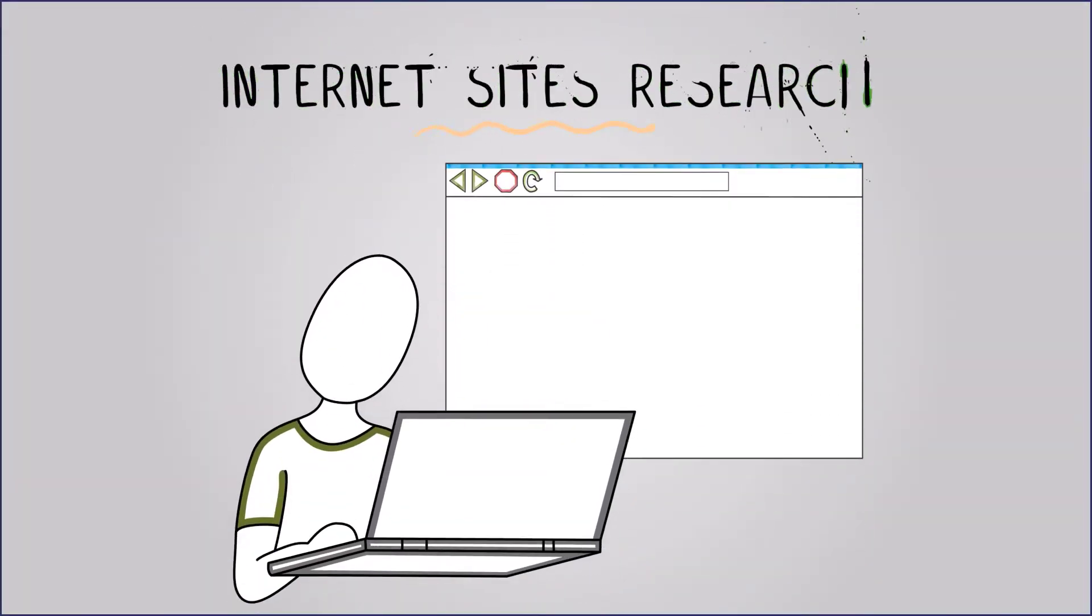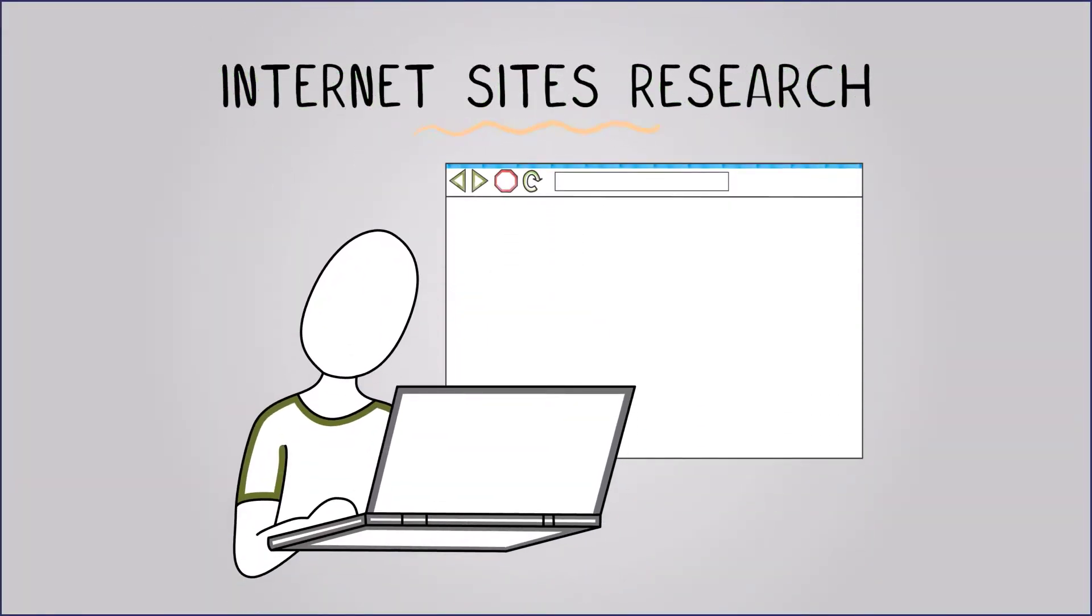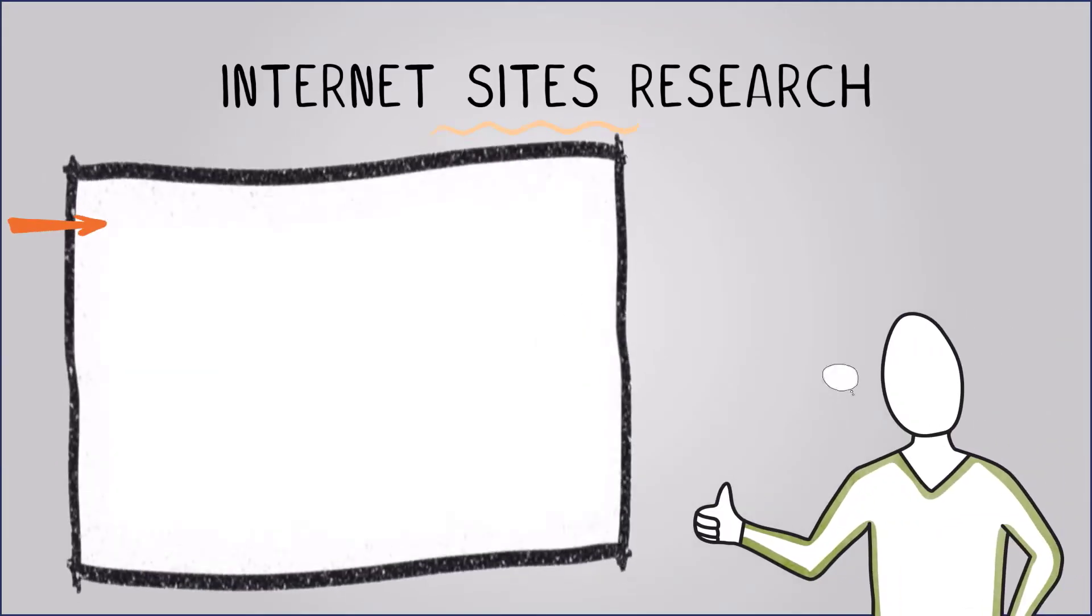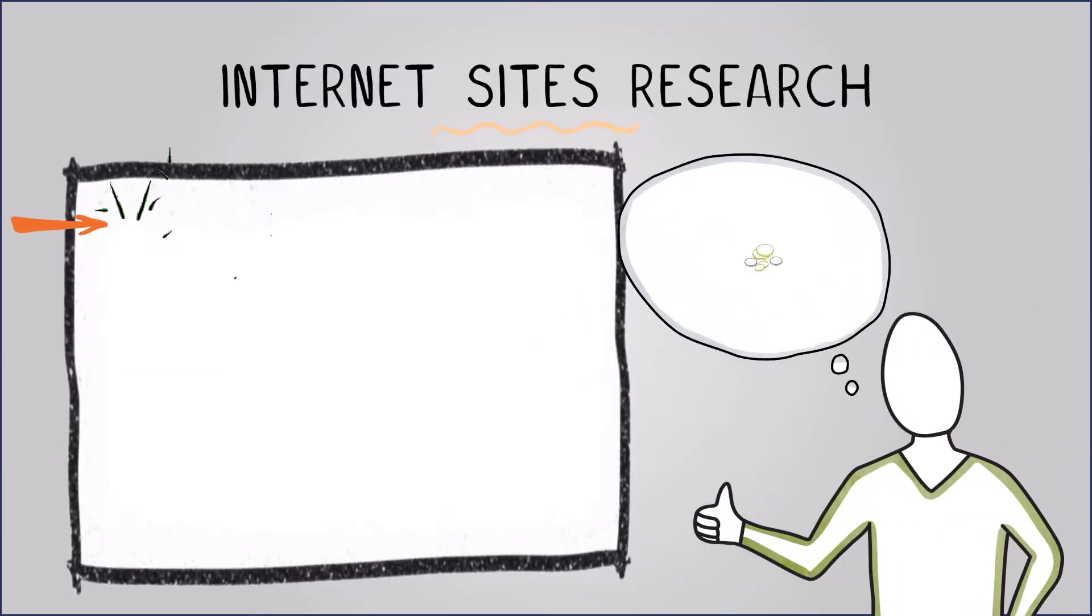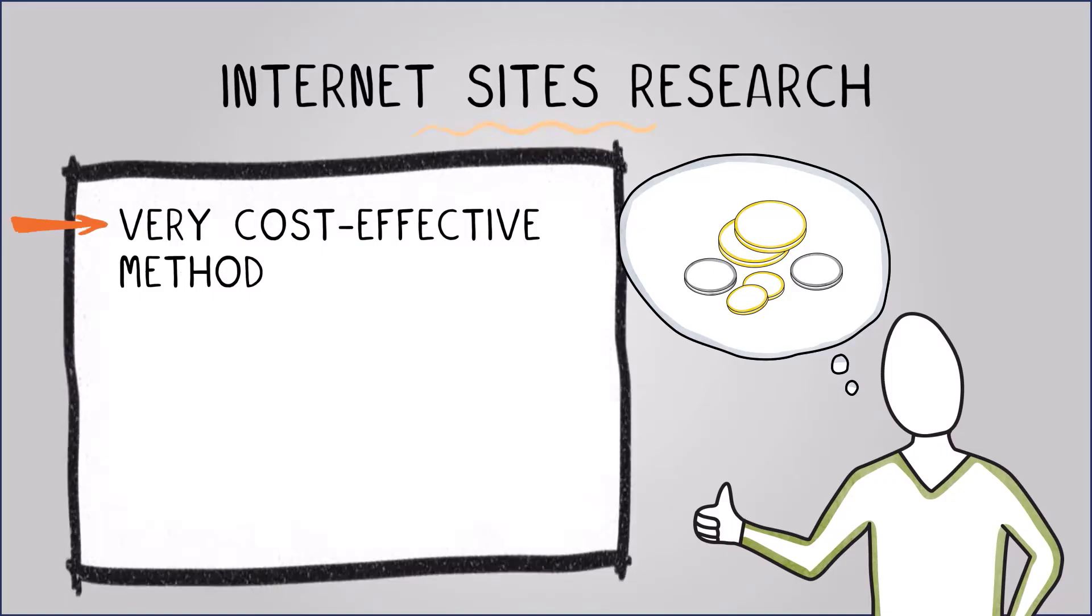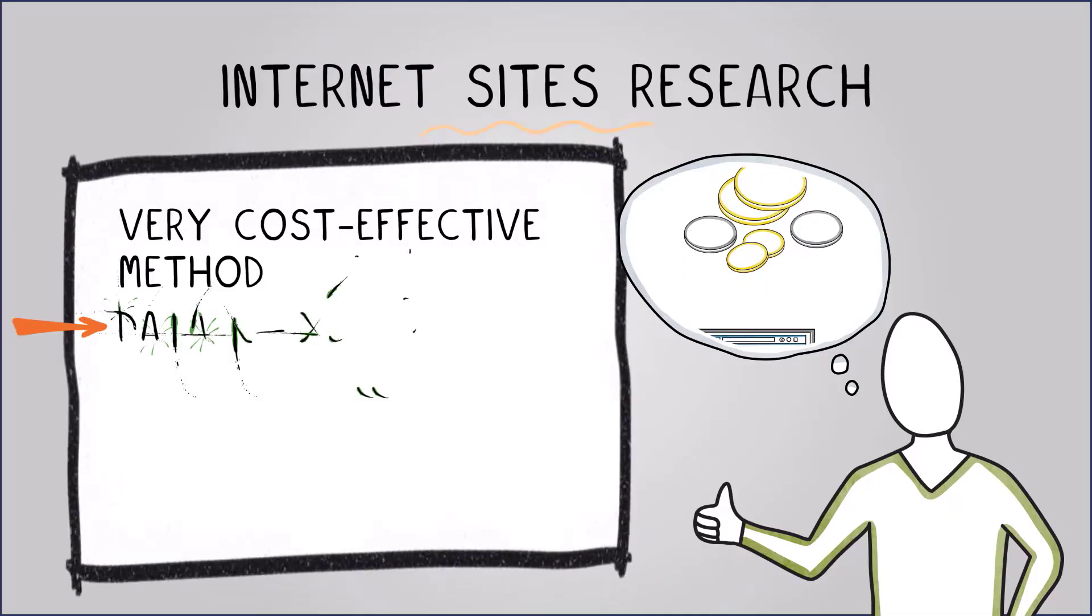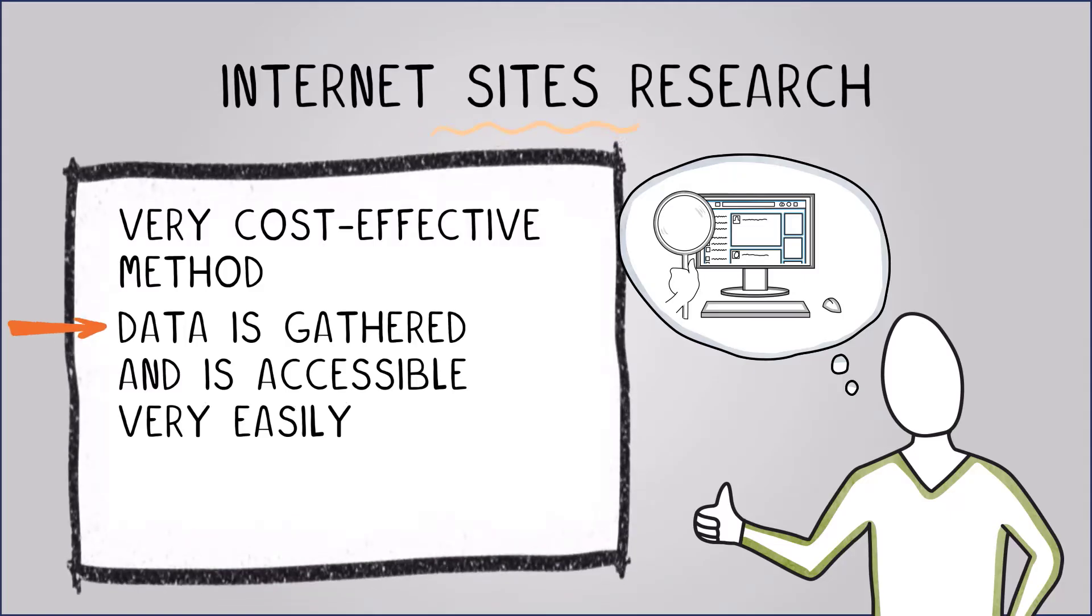Next let's talk about internet sites and research. The internet offers a vast array of information making it easy to find data on almost any topic. Advantages include that online information is typically freely available and so this is a very cost-effective method of market research. Even paid online sources will be cheaper than doing the research yourself.